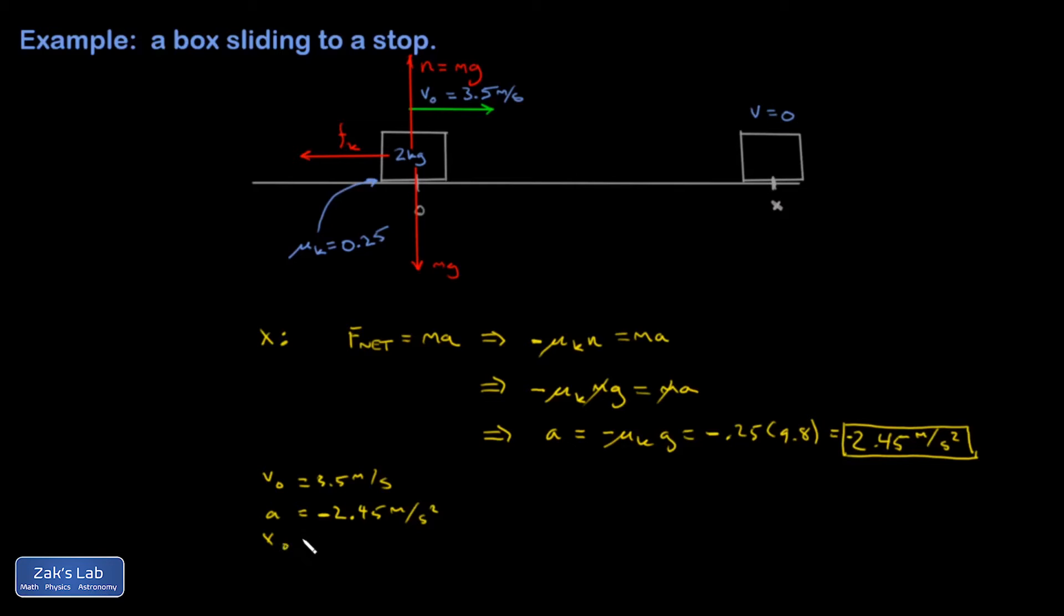I have an initial position. I just labeled it as 0. And then a final position that I want to calculate. So that's the distance to slide to a stop.